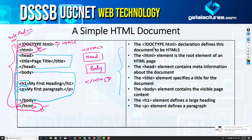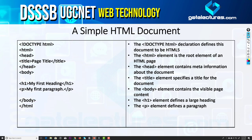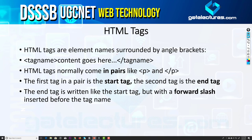The DOCTYPE HTML declaration defines the document as an HTML5 document. The HTML element is the root element of the HTML page. The head element contains meta information about the document. The title element specifies a title for the document — we will see what the title element does. The body element contains the visible page content, and these are all the elements defined for this HTML page.